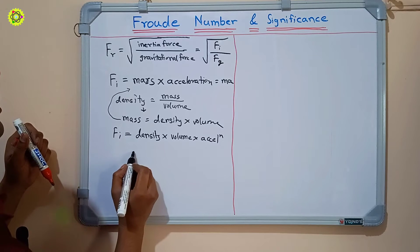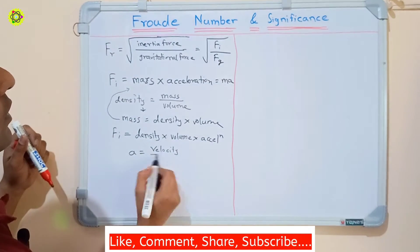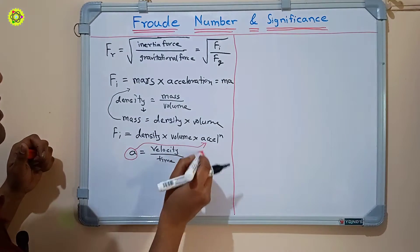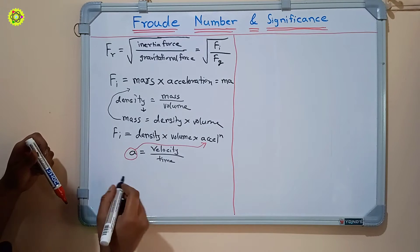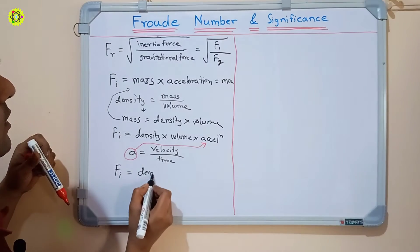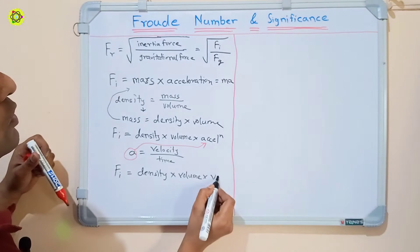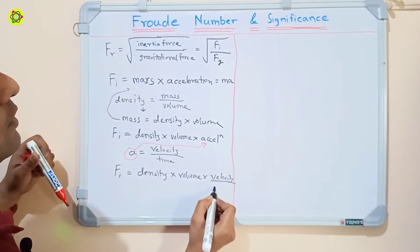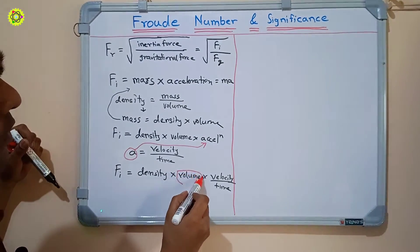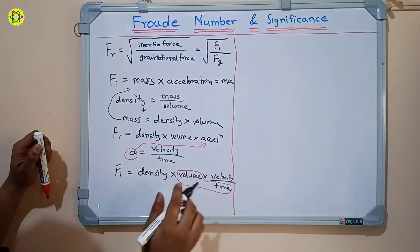Acceleration a equals velocity upon time. Substituting this into the equation, inertia force Fi equals density into volume into velocity upon time. We can see that volume upon time gives us the volumetric flow term.